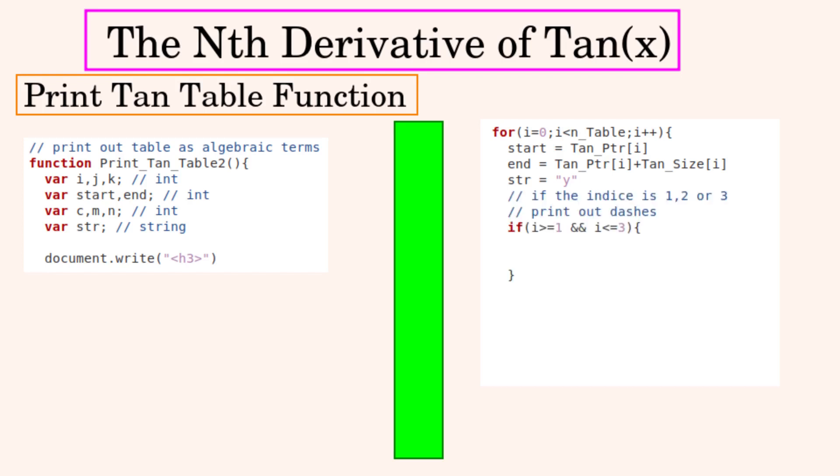If it's the first, second or third derivative we'll write it out in dash notation. And we'll make up a loop to write in the number of dashes that we require to represent the first to third derivatives.